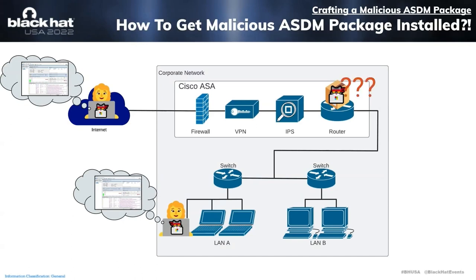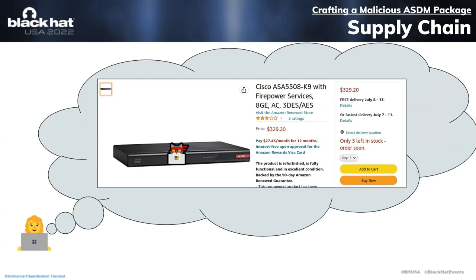The only challenge is installing our malicious ASDM package in the first place. It does require elevated privileges to install packages on the ASA, so that is certainly a limiting factor. But attackers can find ways to get the required credentials, use an inside attacker, or trick an administrator into installing a malicious package. My favorite vector is a supply chain attack. When I bought our test ASA 5506X with Firepower Services, it arrived with an ASDM package already loaded. I had no way of knowing if it was a valid Cisco ASDM package. The reseller could have planted a malicious package, and this isn't a theoretical threat — it is a viable and demonstrable attack that, if done correctly, would leave the victim none the wiser.